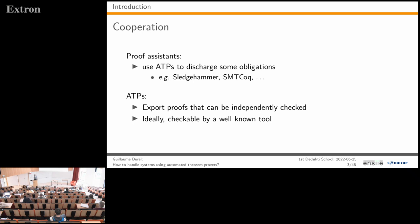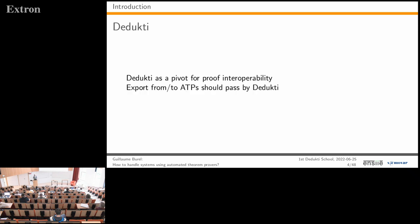On the other hand, for automated theorem provers, if we want to increase confidence in them, we can make them produce proofs that can be independently checked. Ideally, such proofs would be in a format checkable by your everyday proof assistant. Since this is the Dedukti school, we want to use Dedukti as a pivot for proof interoperability, so all exports to and from automated theorem provers should pass through Dedukti.